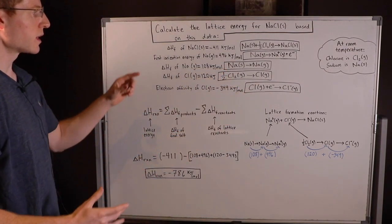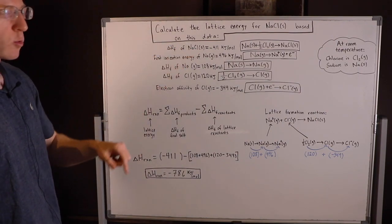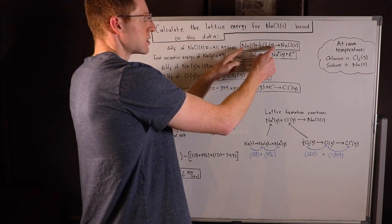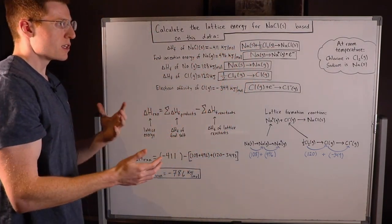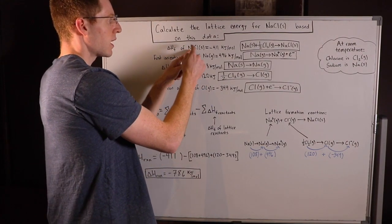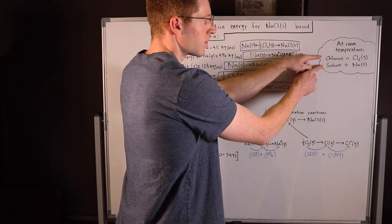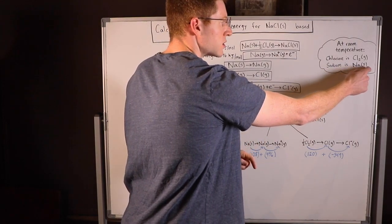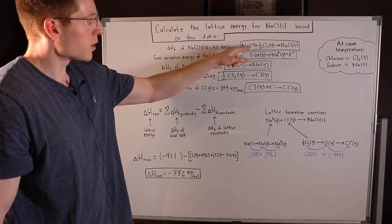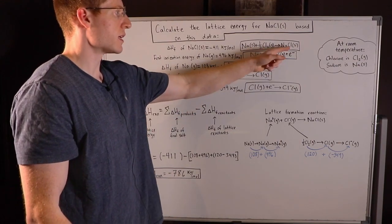So let me show you how I got those. The first chemical process is the heat of formation of NaCl solid. Whenever you're doing a heat of formation equation, you always put the reactants in their standard states. Standard state is roughly room temperature. So we know NaCl is made up of sodium and chlorine. At room temperature, sodium is Na solid and chlorine is Cl₂ gas. We put the reactants in those states, and we have to put a one-half in front of the Cl₂ because we only need one chlorine to make NaCl solid.